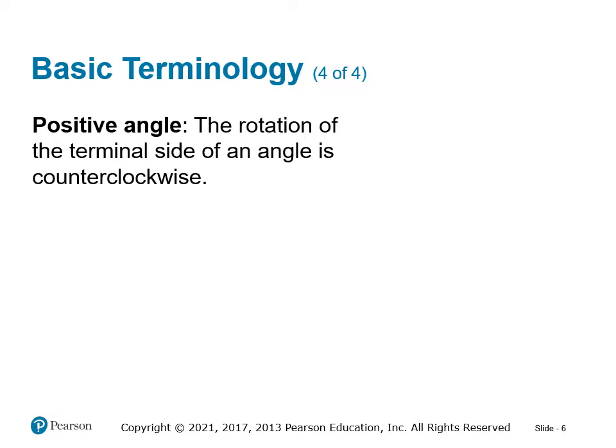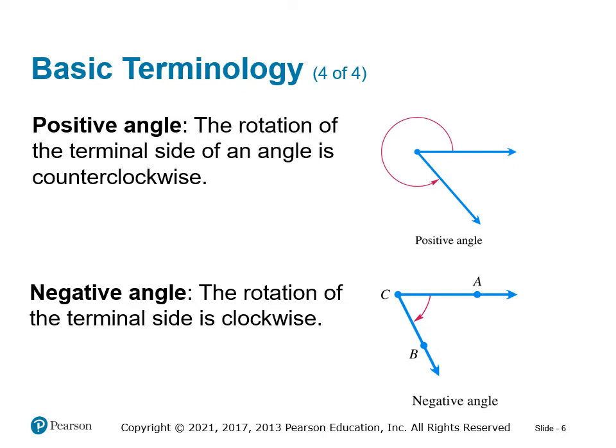A positive angle is when we rotate from the initial side in a counterclockwise direction — starting at what looks like the x-axis and going almost all the way around. A negative angle starts at the initial side but rotates in a clockwise direction, as shown in the second example at the bottom of the page.